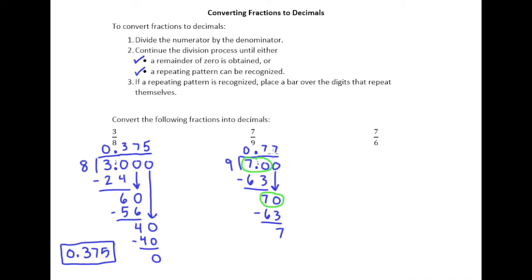So we understand that the answer here for seven-ninths is 0.7777, and the sevens are never going to stop. But that's not a great, concise way to write our answer. If a repeating pattern is recognized, place a bar over the digits that repeat themselves. So in this case, it's going to only be a single digit that repeats itself. I'm going to have 0.7 with a bar over it. We always want our bar to sit over the least number of digits possible, just the digits that will repeat themselves over and over.